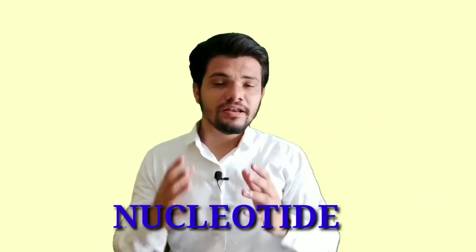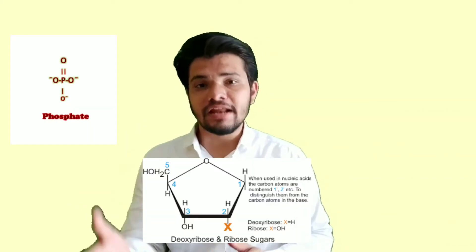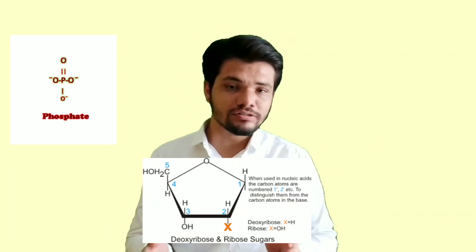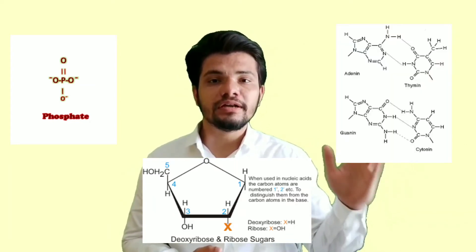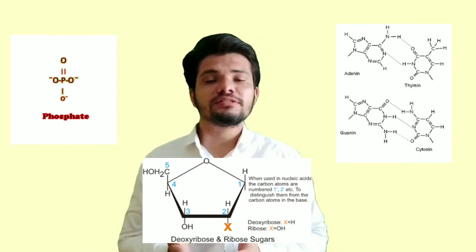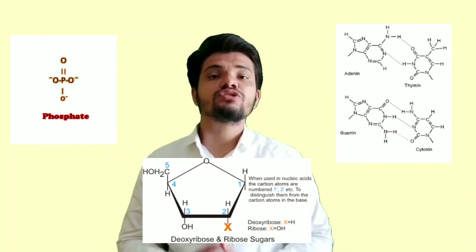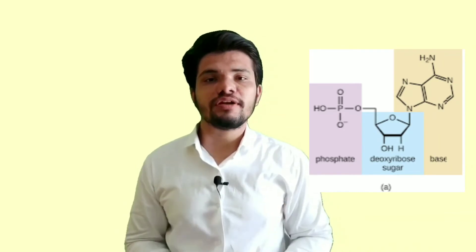A nucleotide is made up of three main components: phosphate, the sugar — either ribose or deoxyribose — and one of four nitrogen bases. These three components join together to form one nucleotide, and many such nucleotides join together.